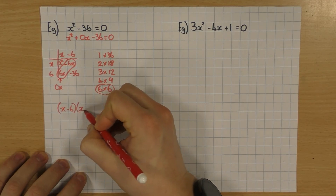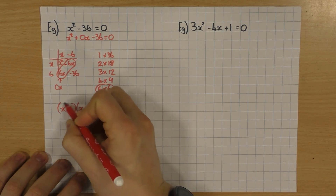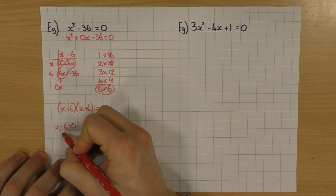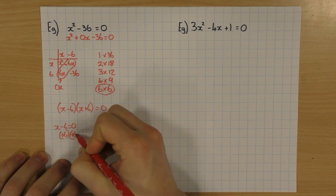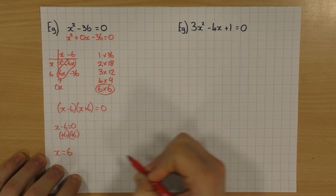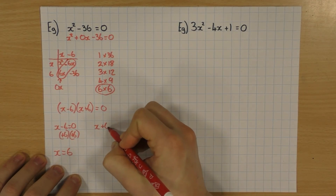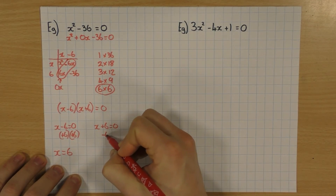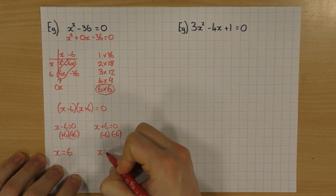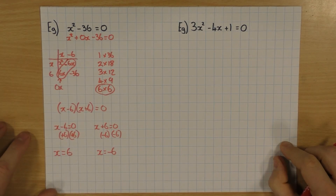So I have x minus 6 times x plus 6 equals zero. Setting each bracket equal to zero: x minus 6 equals zero, so plus 6 to both sides gives x equals 6. And x plus 6 equals zero, so minus 6 to both sides gives x equals minus 6.